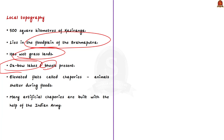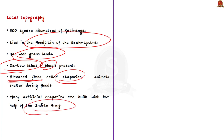Since Kaziranga lies in the flat plains of the Brahmaputra River, it experiences a lot of flooding. How do animals survive during floods? The animals use chapuris to survive. Chapuris are elevated flat plains. During flooding, animals move to these chapuris, and when the flooding retreats, they go back to their habitat. Kaziranga National Park has many chapuris, both manmade and natural. The manmade ones were built by the Indian Army to protect animals during flooding.